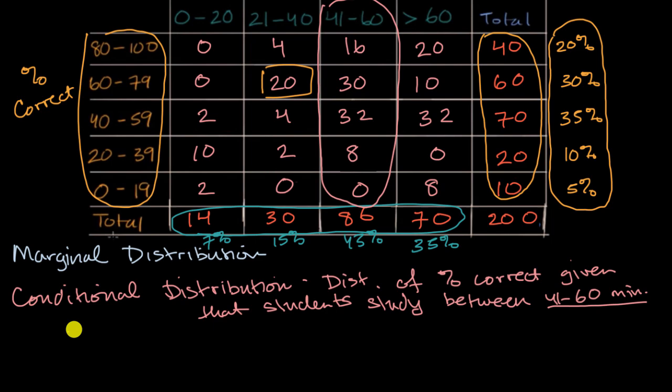So if we set up the various categories: 80 to 100, 60 to 79, 40 to 59, and continue it over here, 20 to 39, and zero to 19. What we'd want to do is calculate the percentage that fall into each of these buckets, given that we're studying between 41 and 60 minutes.